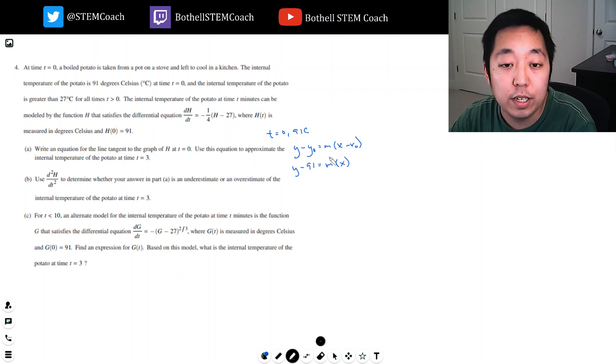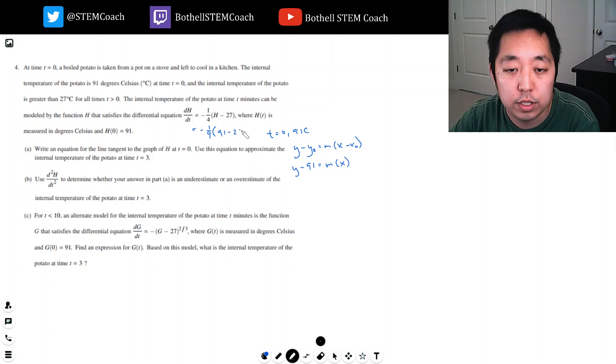Now I need to figure out the slope. The slope is given by this differential equation—the derivative dh/dt equals negative one-fourth times (h minus 27). h is 91 in this case. So 91 minus 27, that's 64. 64 over 4 is 16, so minus 16. The equation is y equals negative 16x plus 91.